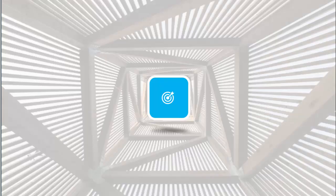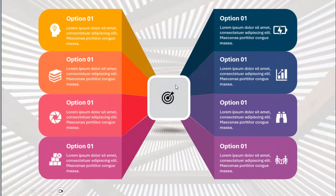In today's tutorial I'm going to show you how to create an eight options infographic slide in PowerPoint. I've added one option along with the icon, and when you click it will show the eight options — option one, two, three, four, five, six, seven, eight. I've just given the name as option one; you can change it depending on the requirement.